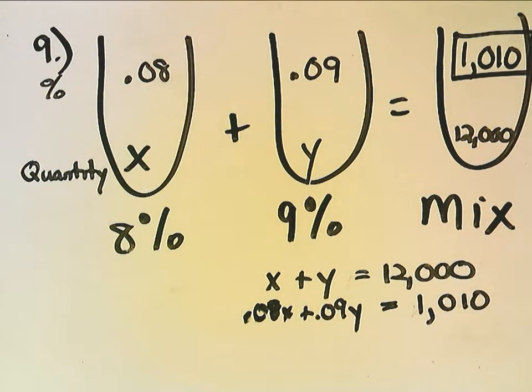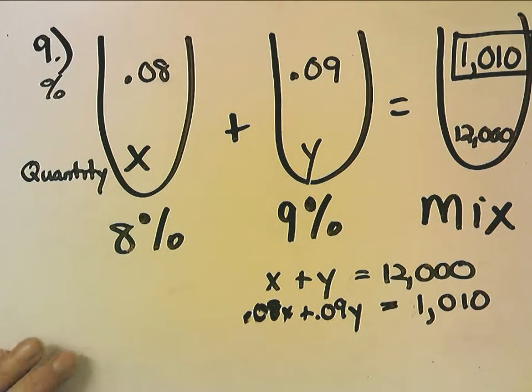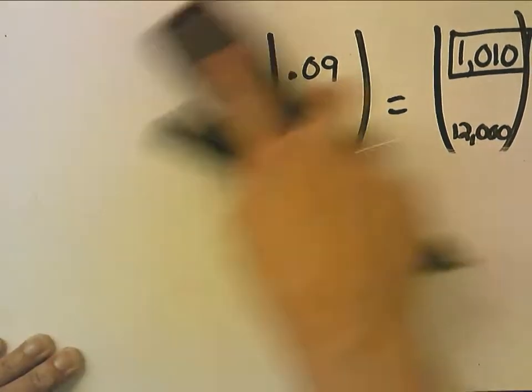So my second equation is .08X plus .09Y equals 1,010. So you never multiply 12,000 times 1,010. And again, I'm going to let you look at page 27. If you have problems solving it, you can look at my work there. But we're going to set up number 10.